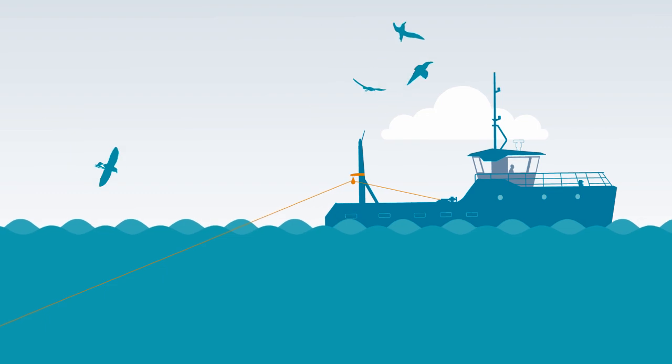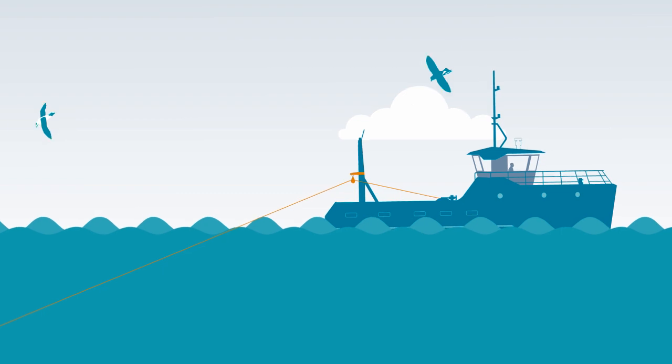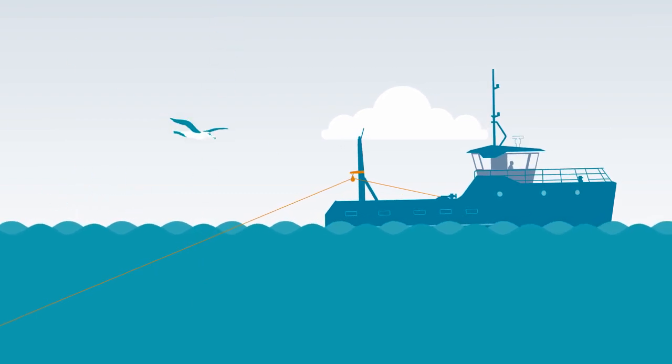Seabird scaring devices deter seabirds from coming into contact with fishing gear. Tory lines and bird bafflers are the main devices utilised by vessels.